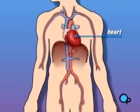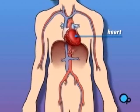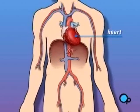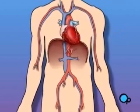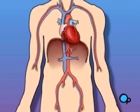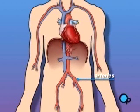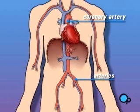The heart is located in the center of the chest. Its job is to keep blood continually circulating throughout the body. The blood vessels that supply the body with oxygen-rich blood are called arteries. The arteries that supply blood to the heart muscle itself are called coronary arteries.